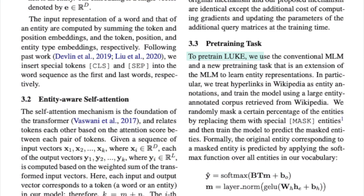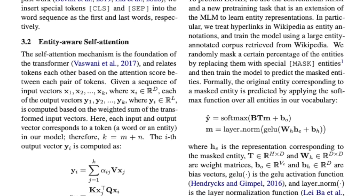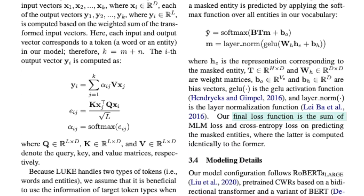Thirdly, we look at the pre-training objective used to train the LUKE Transformer. To pre-train LUKE, they use the conventional masked language model along with a new pre-training task to learn entity representations. They use hyperlinks in Wikipedia as entity annotations and train the model on Wikipedia data. They randomly mask a percentage of entities and train the model to predict the masked entities. The final loss function for LUKE is the masked language model loss plus the cross-entropy loss on predicting masked entities.